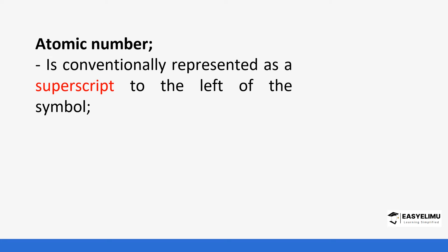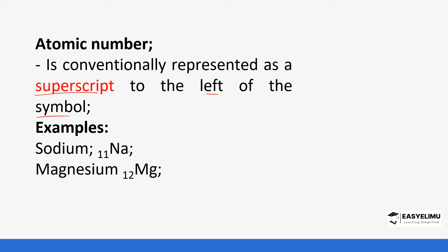The atomic number is represented as a subscript to the left of the element symbol. For example, sodium with atomic number 11 has the 11 placed as a subscript on the left side of its symbol. Magnesium with 12 protons has atomic number 12, also placed as a subscript on the left side of its symbol.